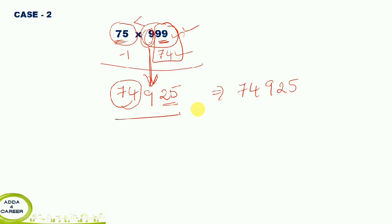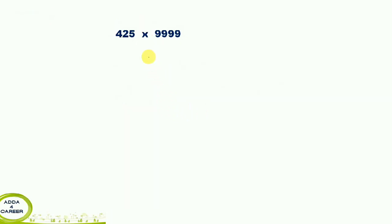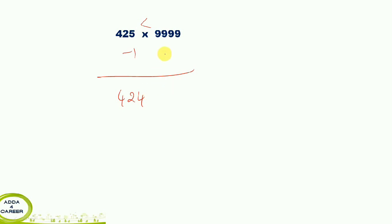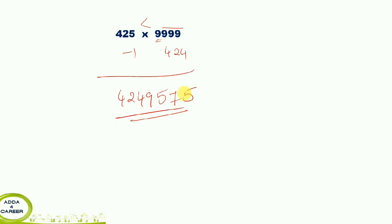Next question with clarity: the number is 425, and 9999 has four 9s — so it's 4 digits. Subtract 1: 425 minus 1 is 424. Since 9999 is 4 digits, we write three 9s in the middle. Then 9 minus 4 is 5, 9 minus 2 is 7, 9 minus 4 is 5. That is our answer: 424 followed by 9575.